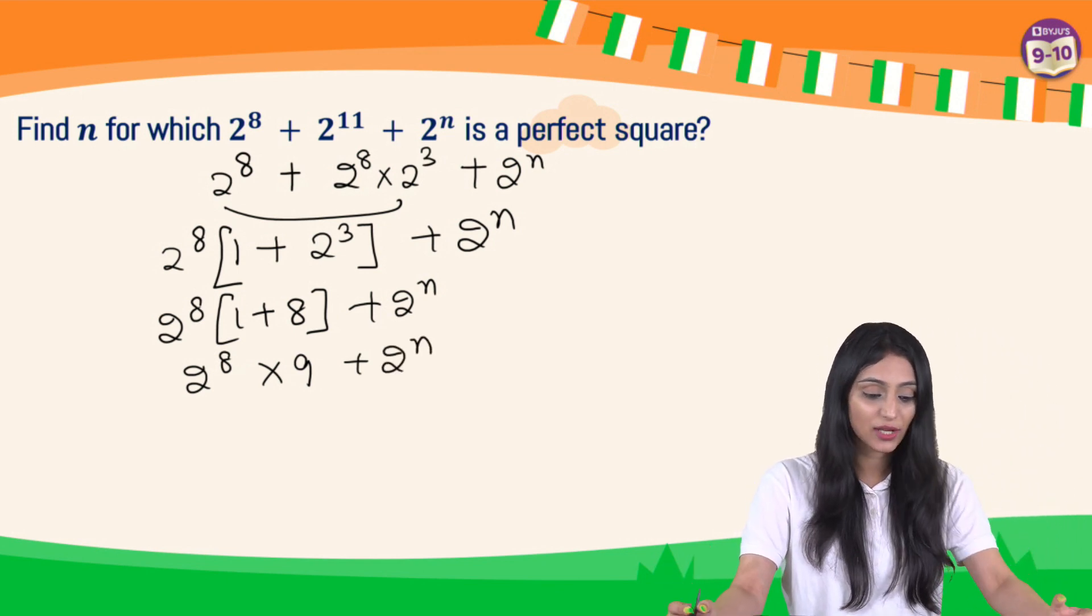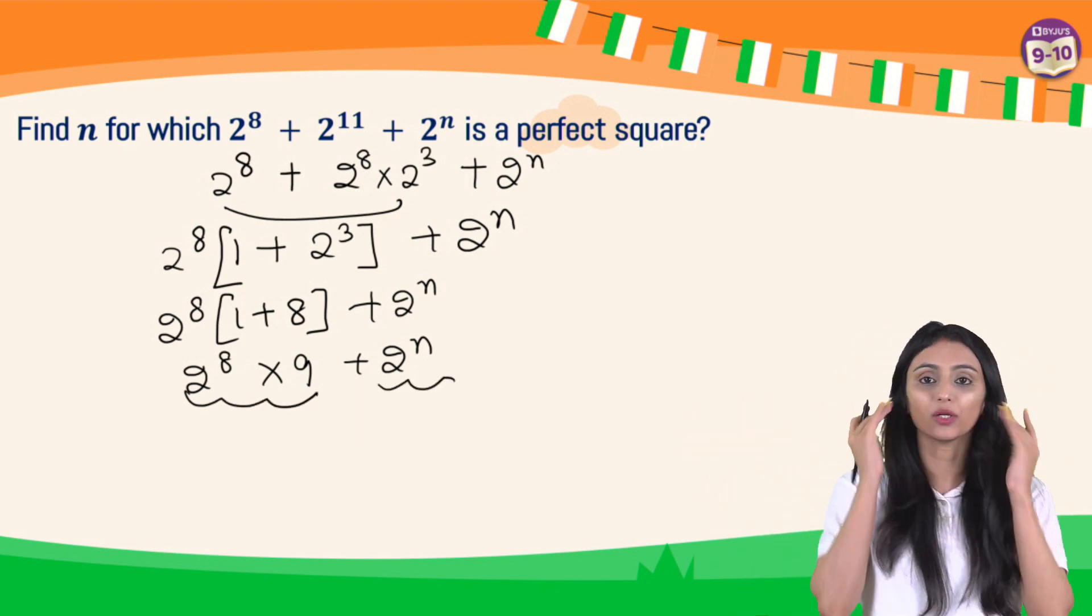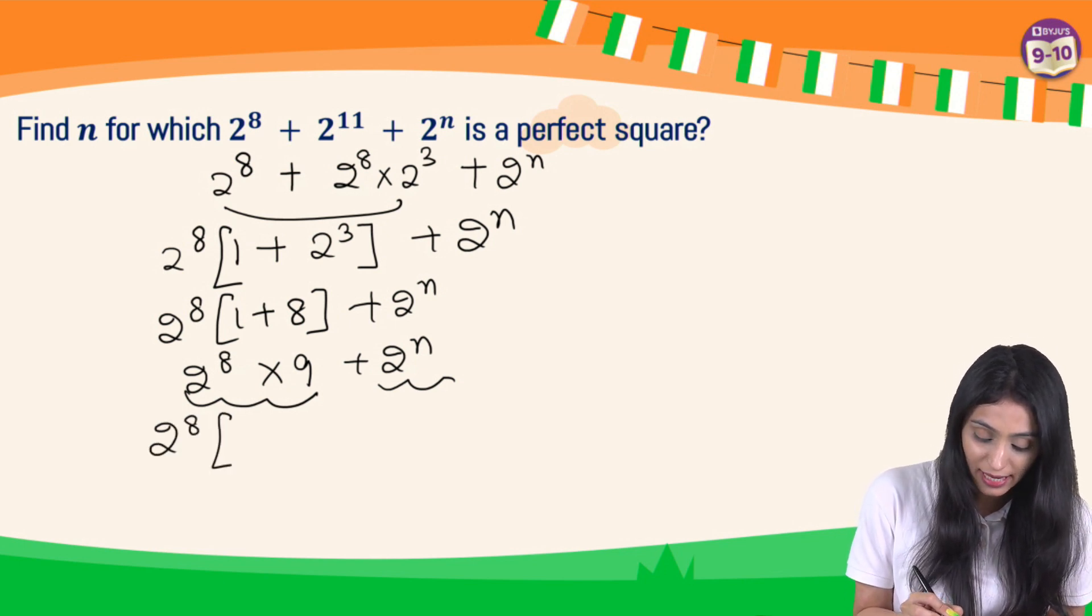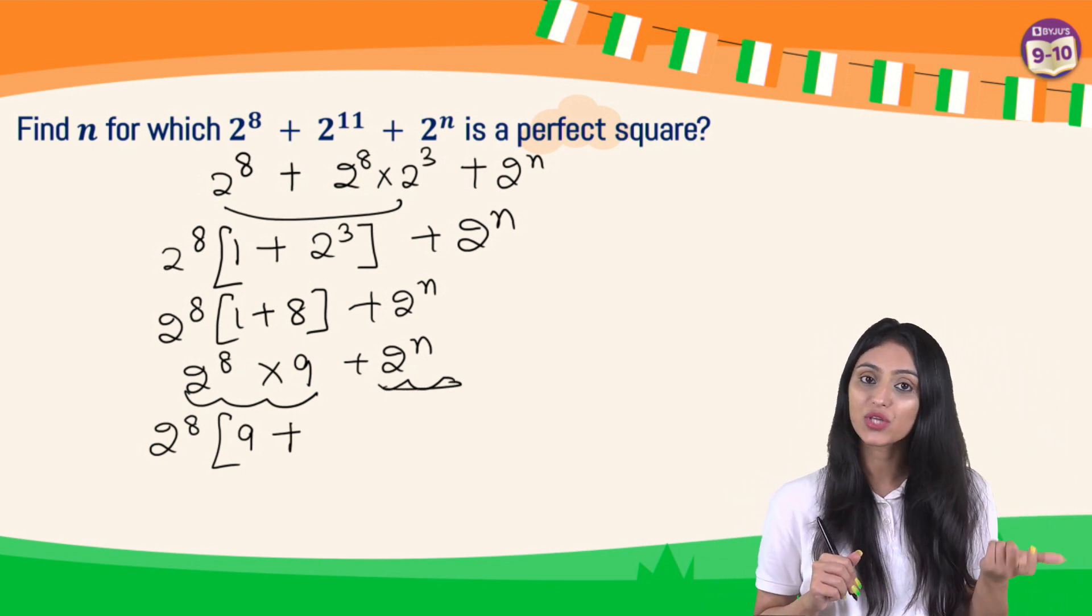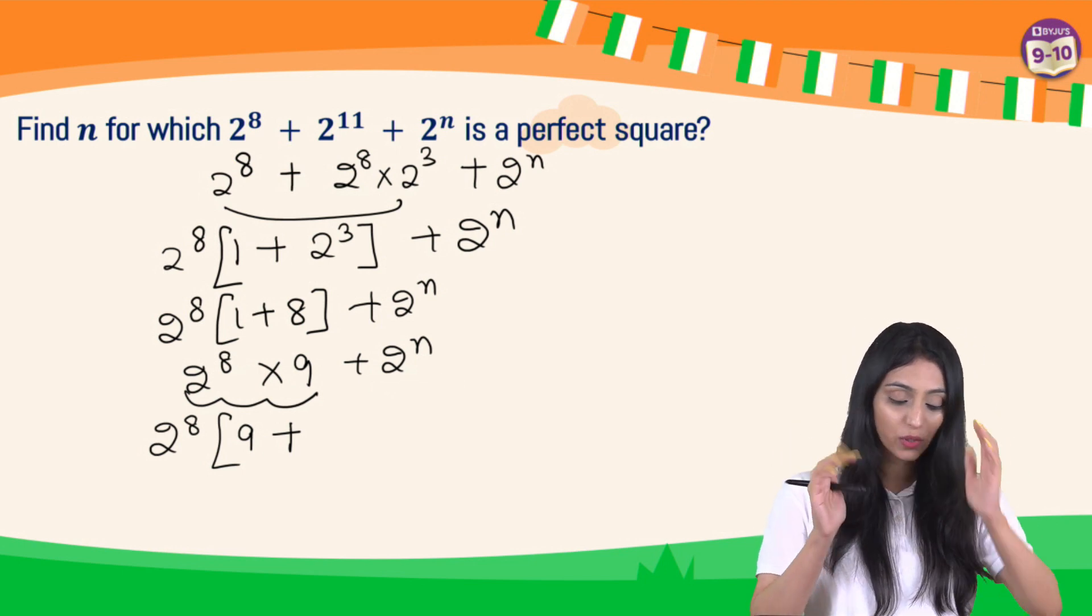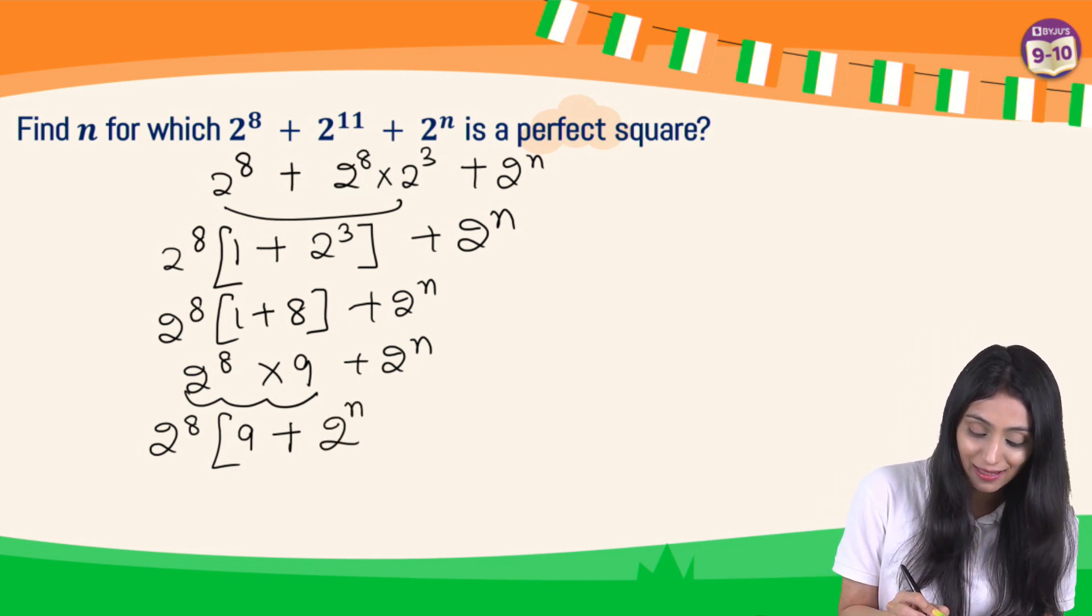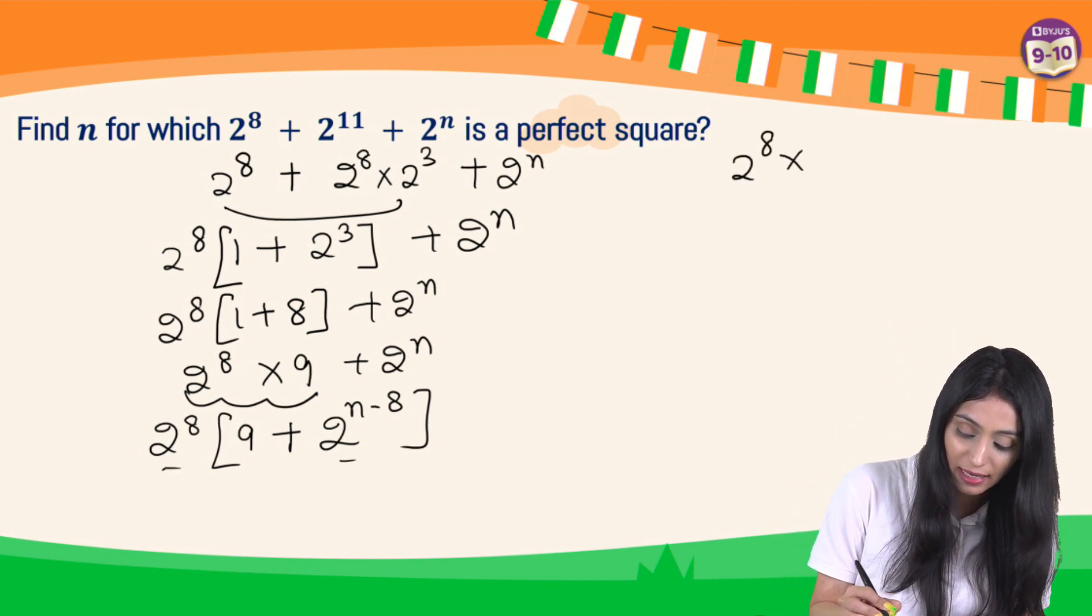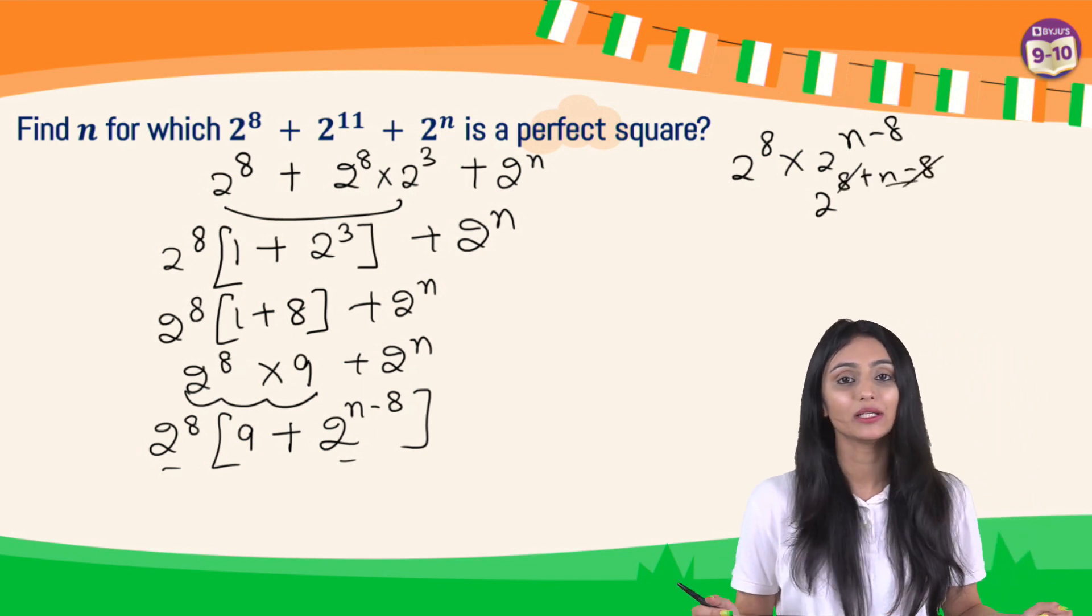Now again if I try to take common from this and this, because there is a multiplication symbol so they are together you cannot split them. So here I can take common, I have 2 to the power 8 inside the bracket, we will have 9 plus here it's 2 to the power n and outside the bracket it's 2 to the power 8. In such cases, what you can do is simply write the base as it is - you need n here right - I can write n minus 8. Because if I multiply this and this again together, the bases get added up right, and you are still left with 2 to the power n.